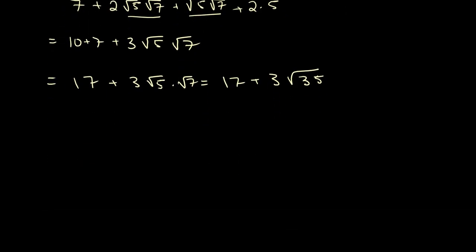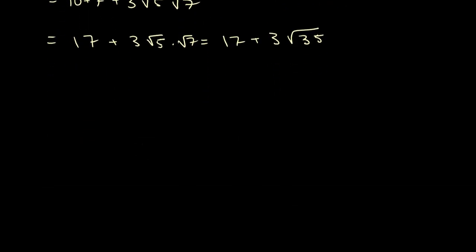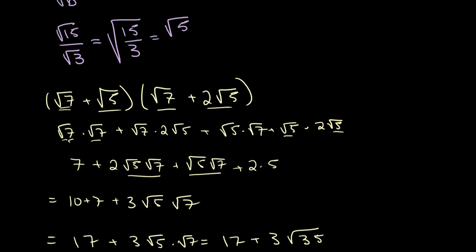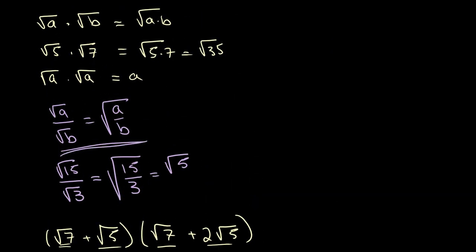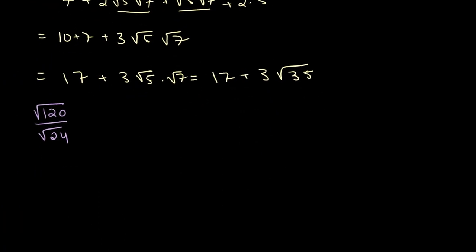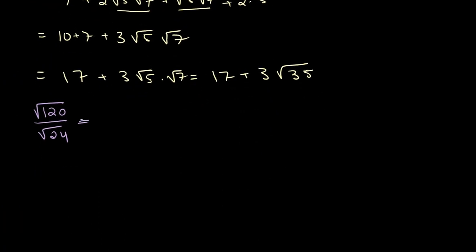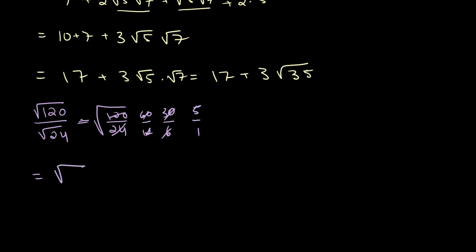Let's look at one more example: simplify root 120 over root 24. Using our division rule, this equals the square root of 120 over 24. Simplifying the fraction: 120 over 24 reduces to 60 over 12, then 30 over 6, then 5 over 1. So the answer is the square root of 5.